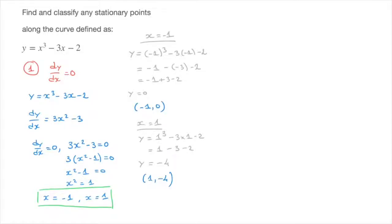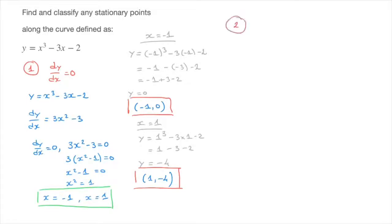I'll go ahead and box both of those stationary points. Now that we know the coordinates, we move on to step 2, where we need to study the sign of this function's derivative, and to do that we use a sign table.